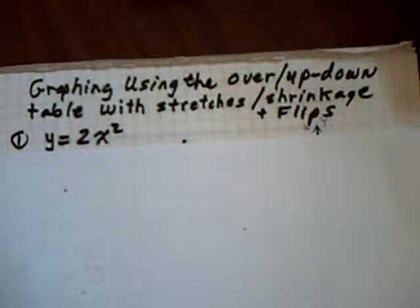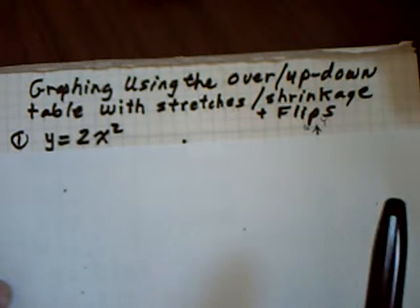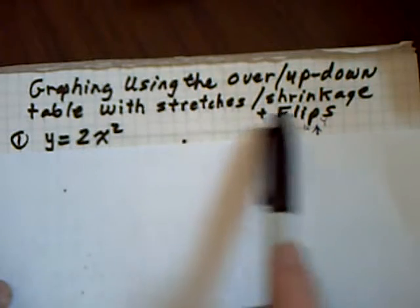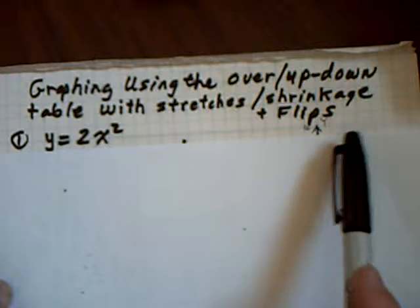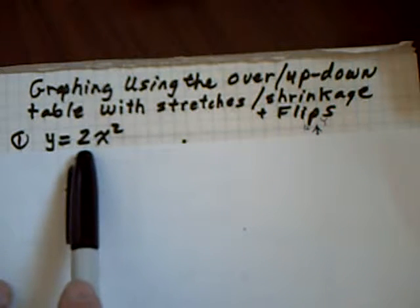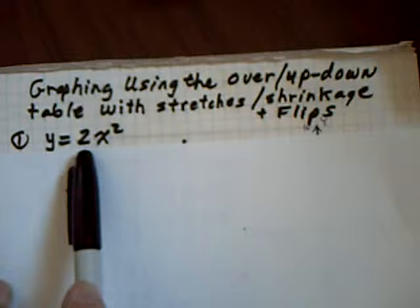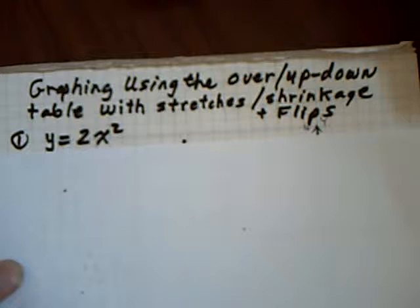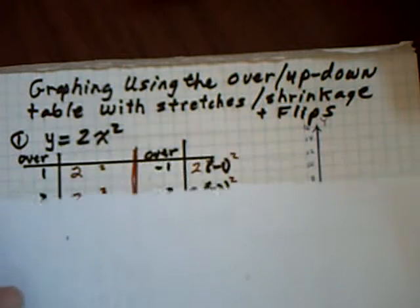In the second of these two videos, I'm going to be showing you graphing using the over-up-down table again, but this time with stretching, shrinking, and flips. What happens when you multiply a number in front? It's going to stretch or shrink the graph, and you'll see how it works in a few seconds.